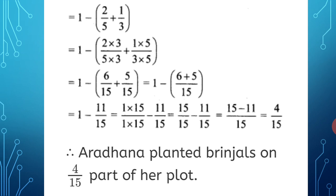1 remains the same. 2 upon 5 multiplied by 3, plus 1 upon 3 multiplied by 5, gives 6 upon 15 plus 5 upon 15. So it becomes 1 minus (6 + 5 upon 15), which equals 1 minus 11 upon 15.